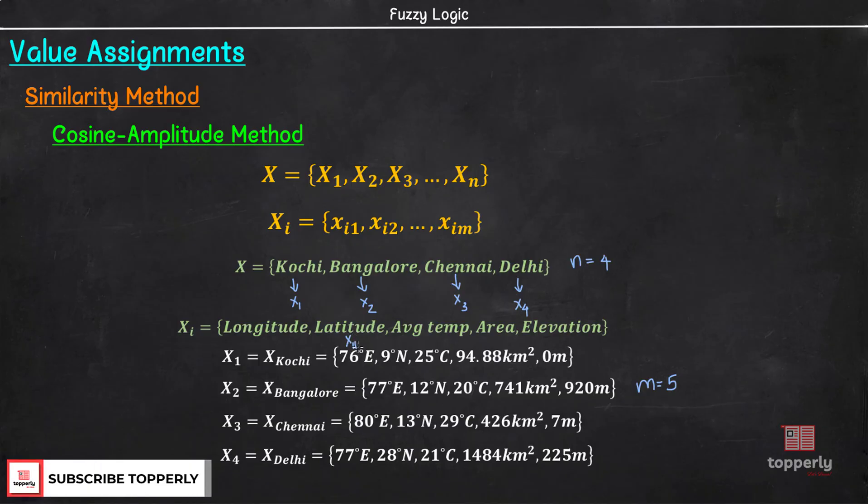So, x11 is 76 degree, x12 is 9 degree north, x13 is 25 degree Celsius, x14 is 94.88 km² and x15 is 0 meter. Similarly, we have x21, x22, x23 and so on. With this example, I hope you understood the concept of data array X with n data samples and each data sample is described by an m-dimensional vector.